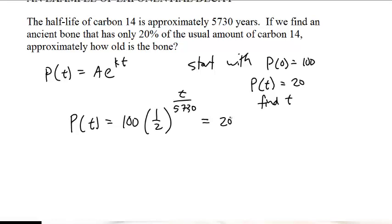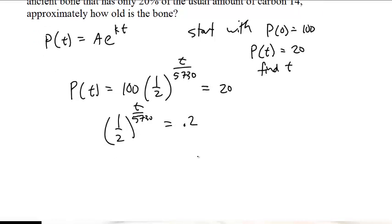Divide both sides by 100, and we get (1/2)^(t/5730) = 0.2. Then we take the natural log of both sides: ln((1/2)^(t/5730)) = ln(0.2).